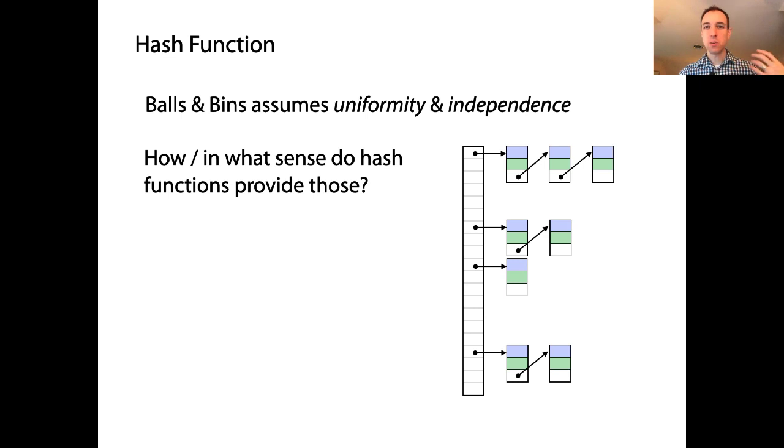Okay, and it's going to involve randomness. We want the hash functions to essentially make arbitrary, random decisions about where to allocate items, how to allocate items to buckets.